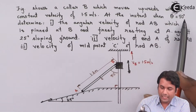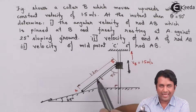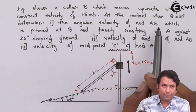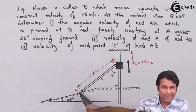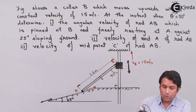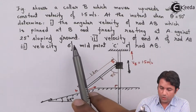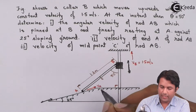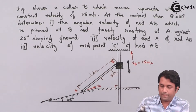At the instant when theta is 50 degrees — that is, the angle between the vertical post and rod AB — we have to find the angular velocity of rod AB. When end B is going up, end A also slides up along the surface. We also need to find the velocity of end A and the velocity of the midpoint C.